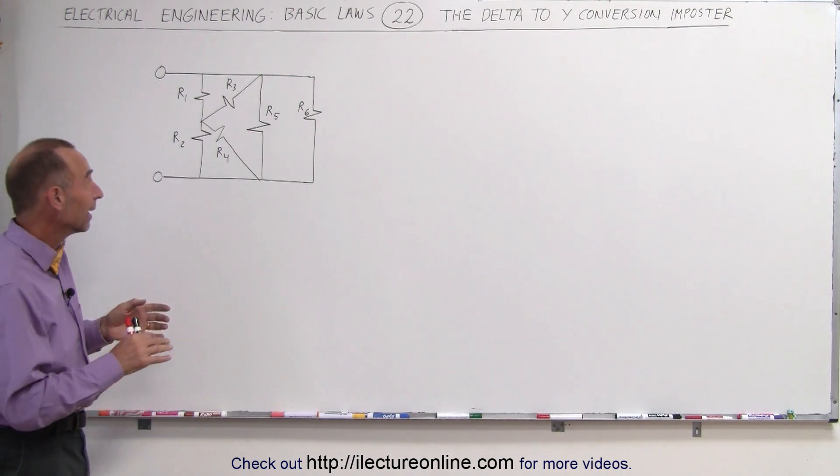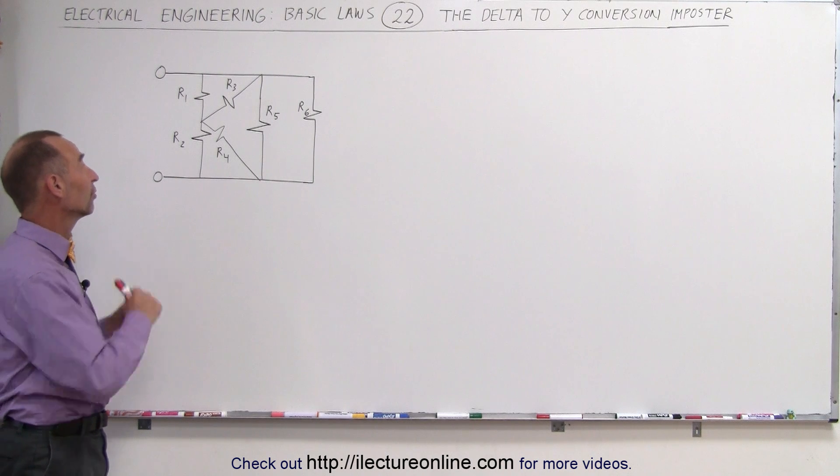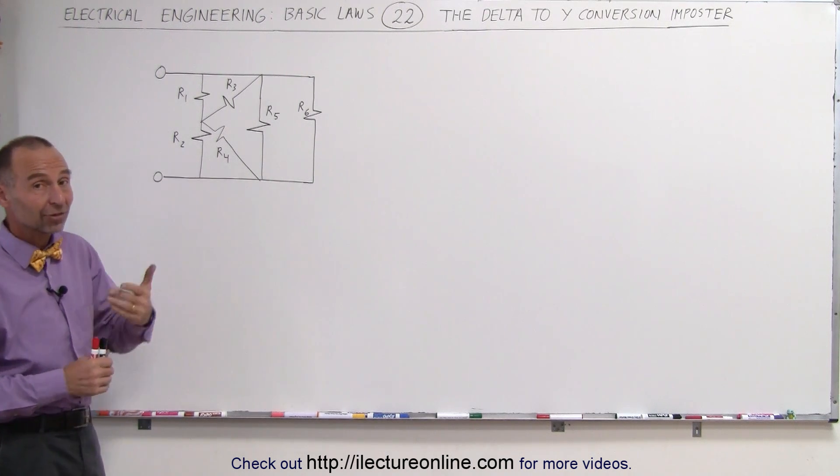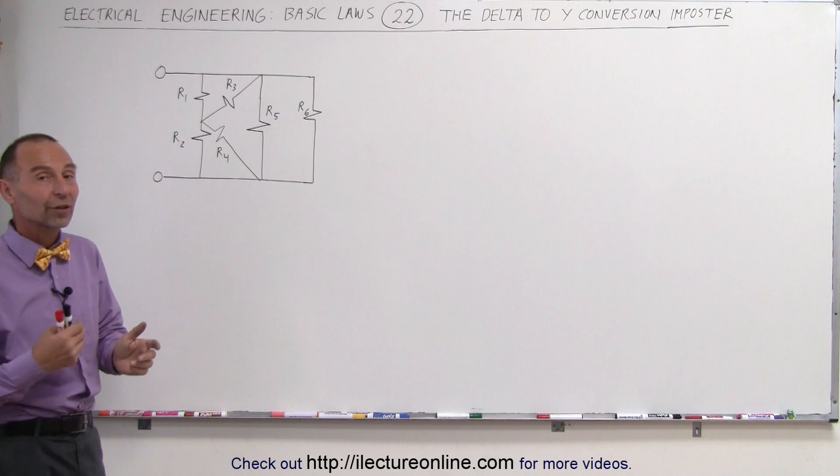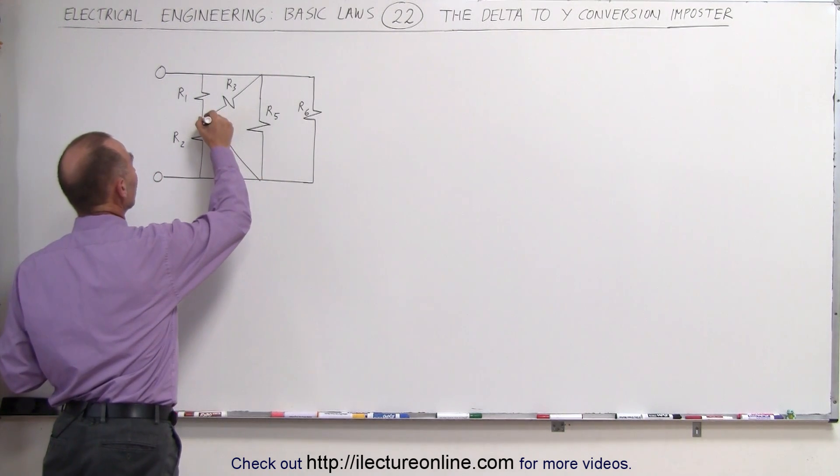sometimes a circuit will look like a delta to Y conversion is the only thing that can help us find the equivalent resistance. And here is something that looks like it may be requiring one of those delta to Y conversions, so you may be very tempted to do something like this.